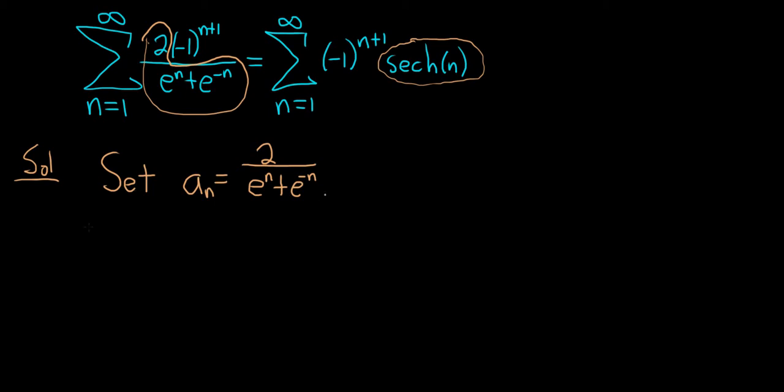All right, and there are two parts to the alternating series test. The first part is to take the limit as n goes to infinity. So let's go ahead and attempt to do that. So we have the limit of 2 over e to the n plus e to the negative n.